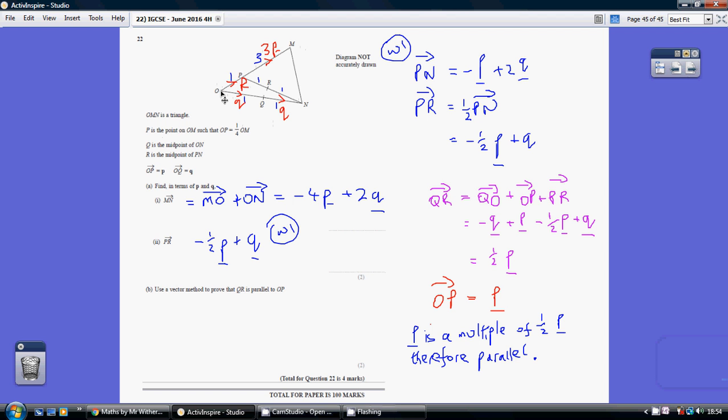We've been told that OP is little p and OQ is little q. So this must also be little q, as it's the same length in the same direction. And this vector from P to M must be 3p, as it's in the same direction but three times as long.